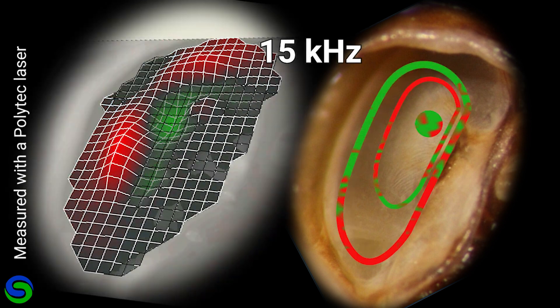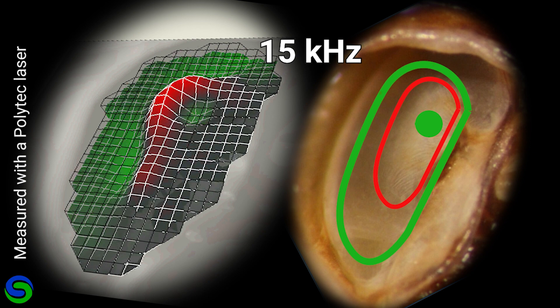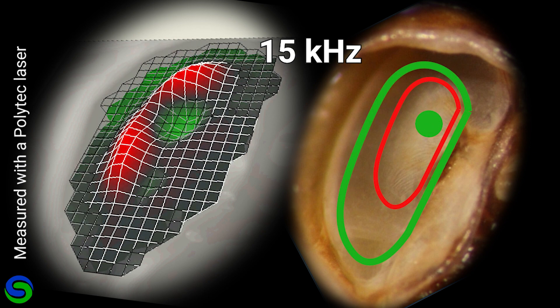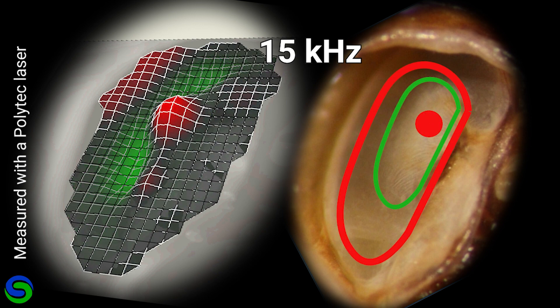Finally, at 15 kilohertz, the membrane is moving in a more complex pattern, almost with what looks like a donut, with the PV and outer part of the membrane moving together in phase.